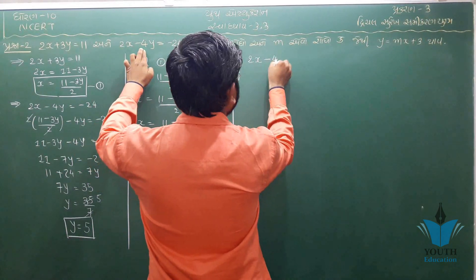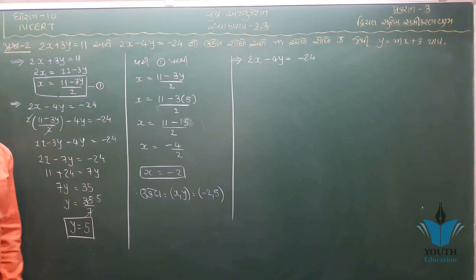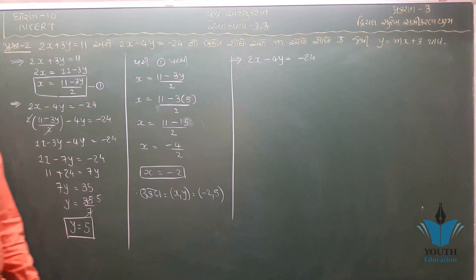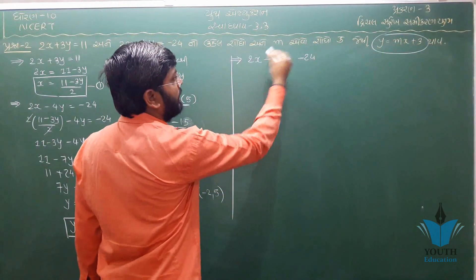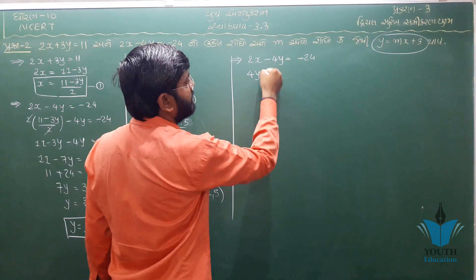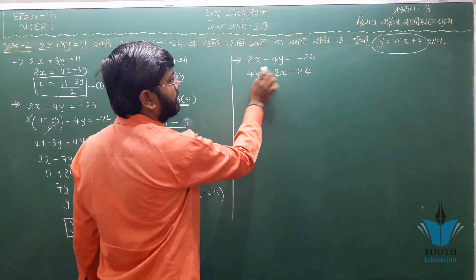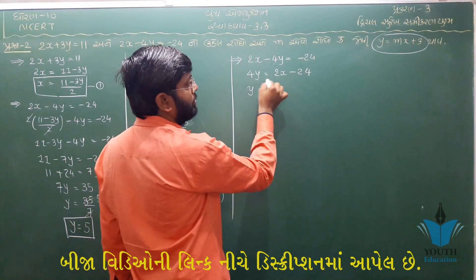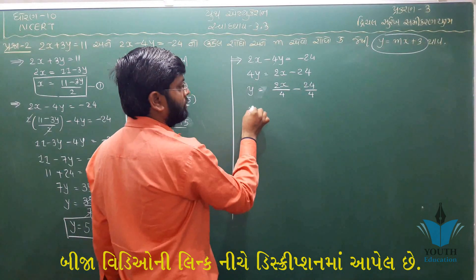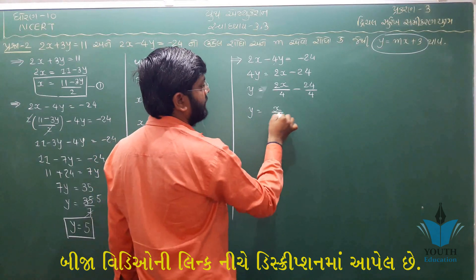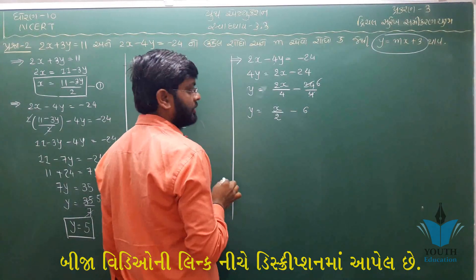Checking: 2x minus 4y equals minus 24. With y equal to 4, 4y equals 4. Then 2x equals 4 minus 24 equals minus 20, so x equals 6.